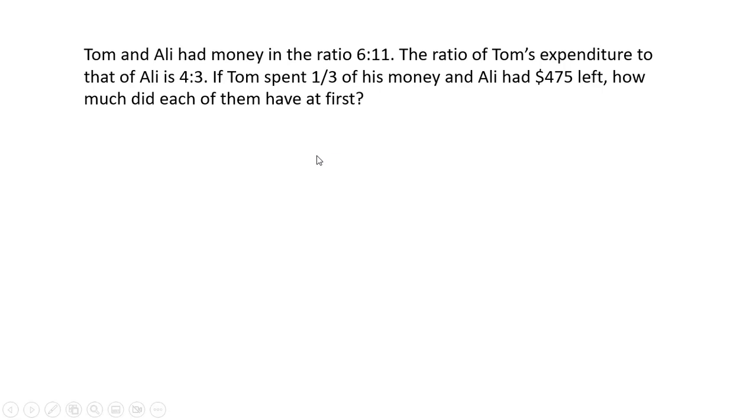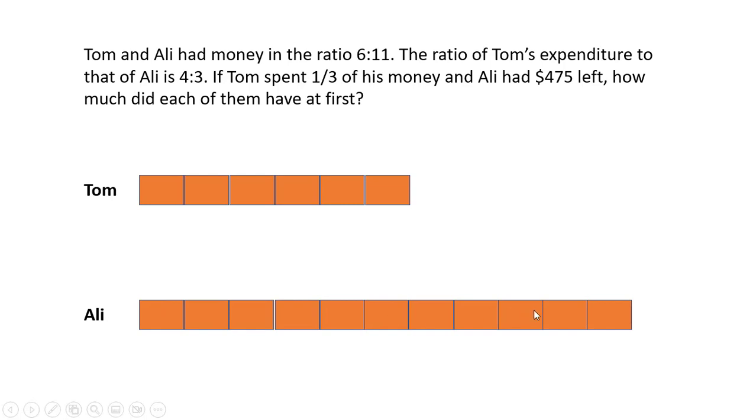First let's draw a model for this statement. Tom and Ali had money in the ratio 6 is to 11. So 6 units for Tom and 11 units for Ali.